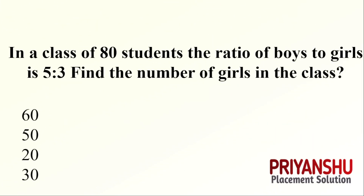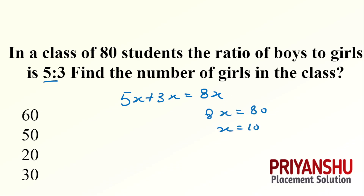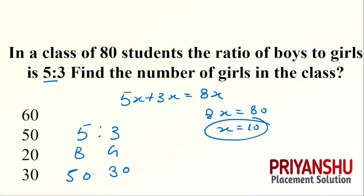In a class of 80 students, the ratio of boys to girls is 5:3. Find the number of girls. Total ratio parts = 5x + 3x = 8x = 80, so x = 10. Boys = 5 × 10 = 50; girls = 3 × 10 = 30. The number of girls is 30.